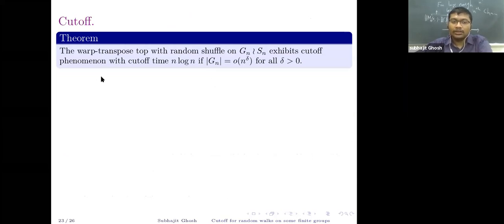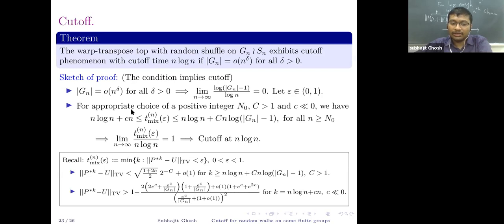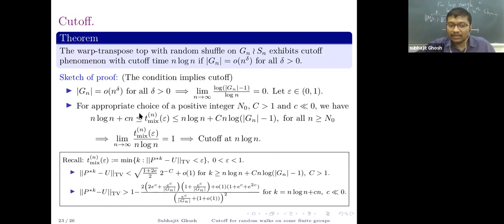The main theorem: the wreath-product top-with-random shuffle on G_n ≀ S_n exhibits cutoff at n log n, provided that |G_n|^{1/n^δ} → 1 as n → ∞ for all δ > 0 (i.e., the growth of G_n is subexponential). The proof: this growth condition gives that a certain limit is 0. For any ε ∈ (0,1), the upper bound gives one side of the inequality with a suitable choice of c(ε), and the lower bound gives the other side with a suitable small c(ε). Dividing throughout by n log n and taking the limit shows the ratio of mixing times goes to 1, confirming cutoff at n log n.